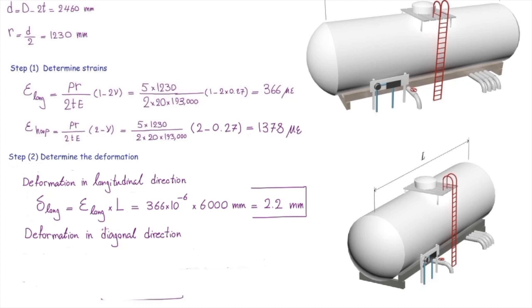Now let's determine how much is the change in the diameter of that. Diameter is related to the hoop strain, and that can be determined in a similar way. Strain in the hoop direction multiplied by the initial diameter. And that would be 1,378 times 10 to the minus 6 multiplied by the diameter, which is 2,500 millimeter. And that would be 3.44.